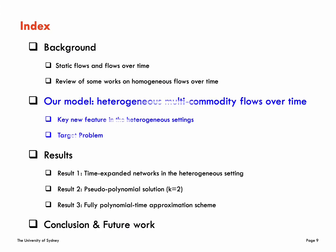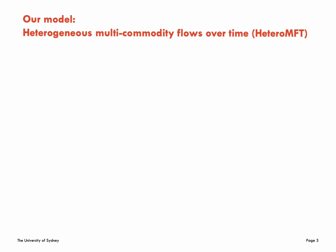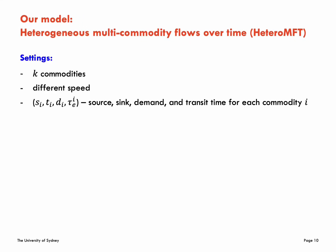I will go over our model: heterogeneous multi-commodity flows over time. In these settings, there are k commodities by allowing each edge to have k transit times tau_ei for each commodity, a source node S_i, a sink node T_i, and a demand D_i.